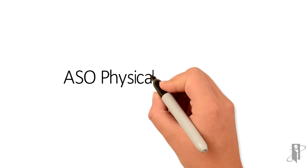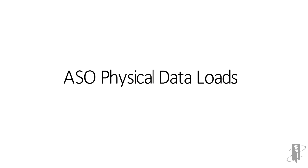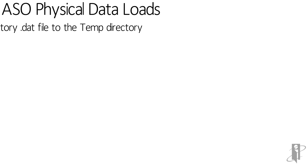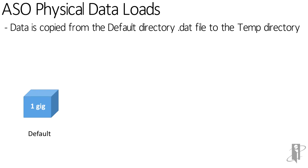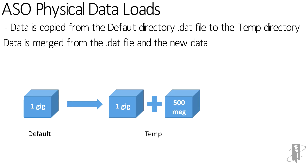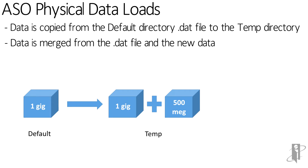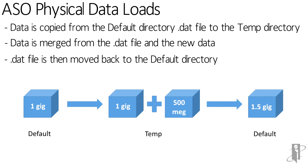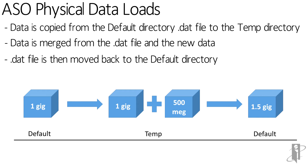So let's talk about ASO loading of data. When we do a physical load, the data is copied from the default directory — the dat file — into the temporary directory. So if I have a 1 gig worth of data in default, it's going to move it over into the temp directory during a data load. We then take and merge the data from that dat file and any of the new data that we brought in — in our case, about 500 meg of data. The dat file is then moved back into the default directory. That's 2.5 gigs worth of data movement.